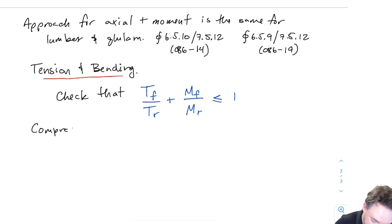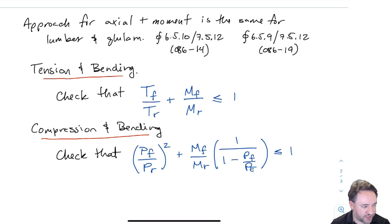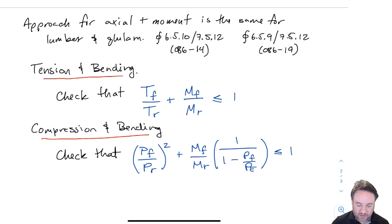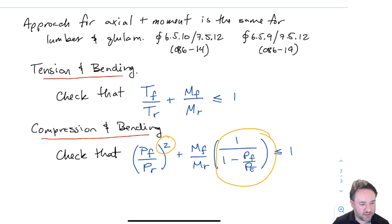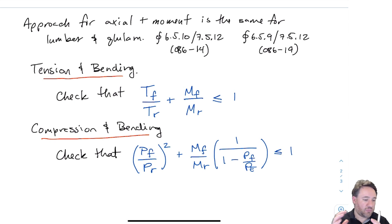For compression plus bending, we have a similar structure — a percentage of compression resistance PF/PR and a percentage of moment strength MF/MR — but with two additional effects. The first term is squared, and there is a large additional term that modifies the moment percentage depending on how close we are to the Euler buckling load. Combined, these must be less than or equal to 1.